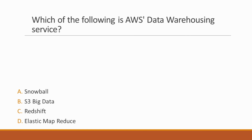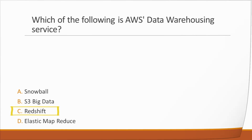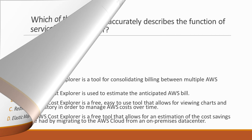Next question: Which of the following is AWS's Data Warehousing Service? Options: A. Snowball, B. S3 Big Data, C. Redshift, D. Elastic Map Reduce. Correct answer is option C, Redshift, because Redshift is AWS's Data Warehousing Service.